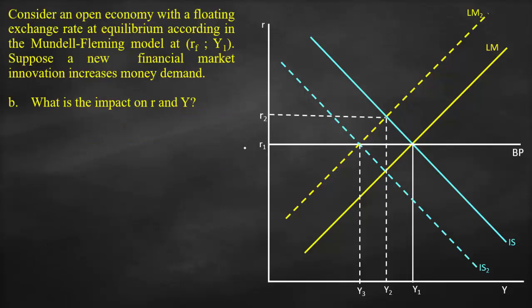The second part of the question, what is the impact on R and Y? We see that R here dropped back and output dropped to Y3. Therefore, we know that R3 is equal to R1, which is equal to RF, and Y3 is lower than Y2, which is lower than Y1.